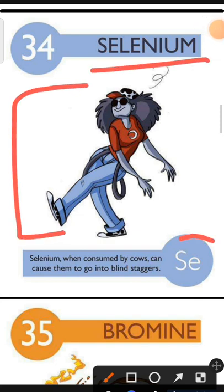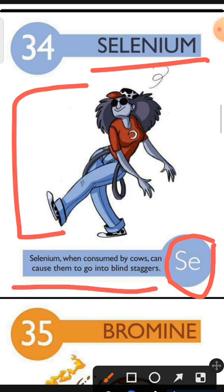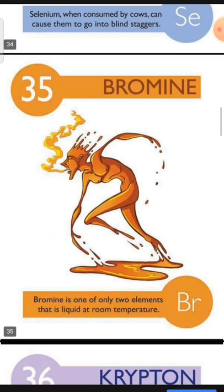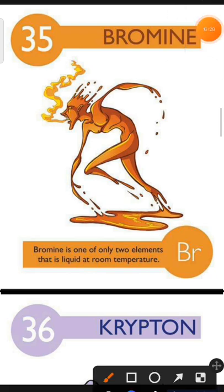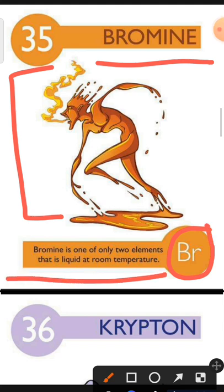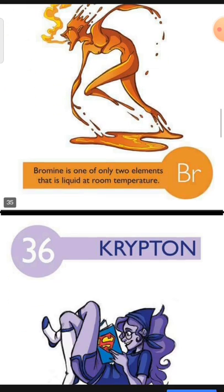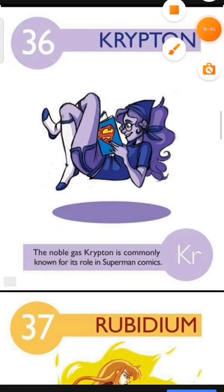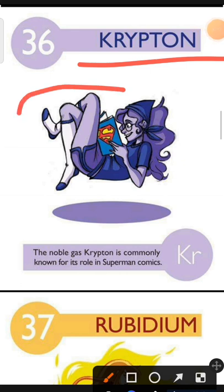Element number 34 is Selenium. The characteristic of Selenium is: Selenium, when consumed by cows, can cause them to go into blind staggers. Element number 35 is Bromine. The characteristic of Bromine is: Bromine is one of only two elements that is liquid at room temperature. Element number 36 is Krypton. The characteristic of Krypton is: the noble gas Krypton is commonly known for its role in Superman comics.